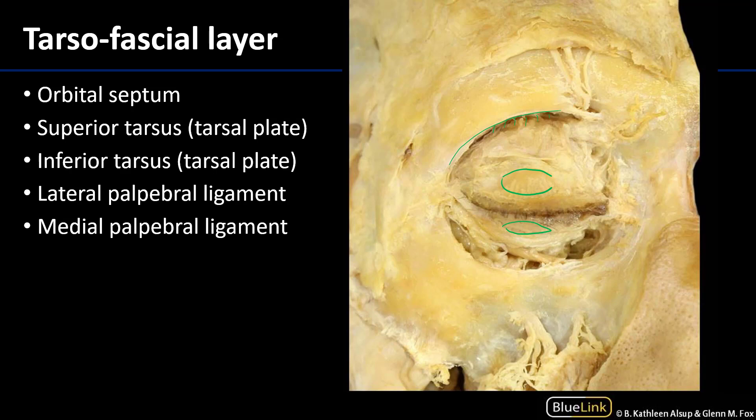The lateral edges of the orbit anchor to the palpebrae via palpebral ligaments. Both the superior and inferior eyelids have lateral palpebral ligaments and medial palpebral ligaments. The medial palpebral ligament is at the medial canthus of the eye and is just anterior to the lacrimal sac, which serves not just as a conveyance for tears but provides a vacuum to draw them across the conjunctival sac as part of the lacrimal apparatus.